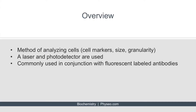Flow cytometry is a lab technique that can be used as a method of analyzing cells. For example, it can analyze cell markers, cell size, and granularity. The cells are analyzed as they move through the flow cytometer in combination with a laser and a photodetector. One powerful way to utilize flow cytometry is by combining it with fluorescent labeled antibodies.